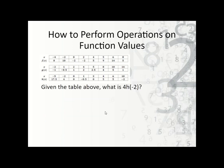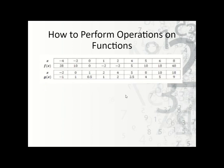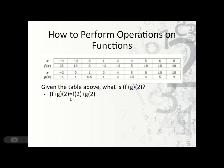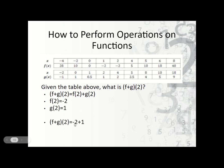Here's another example: what is 4 times h of negative 2? When x is negative 2, y is 4. So 4 times h of negative 2 is 4 times 4, which is 16. Another example: what is (f + g) of 2? f plus g of 2 is the same thing as f of 2 plus g of 2. f of 2 is negative 2 and g of 2 is 1. So we add negative 2 plus 1, which is negative 1. When you see f plus g or f minus g, it means take f of that value and then apply the operation with g of that number.